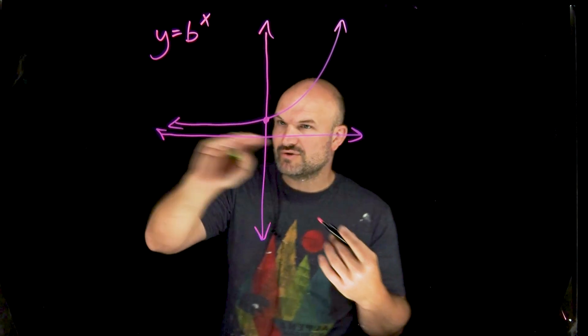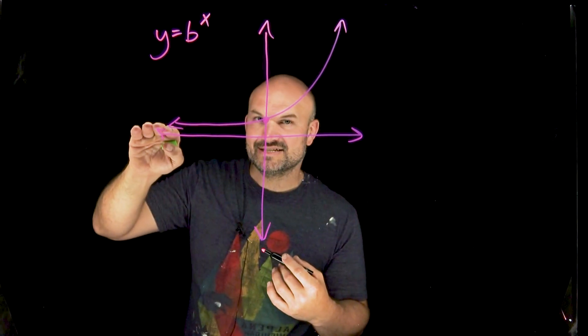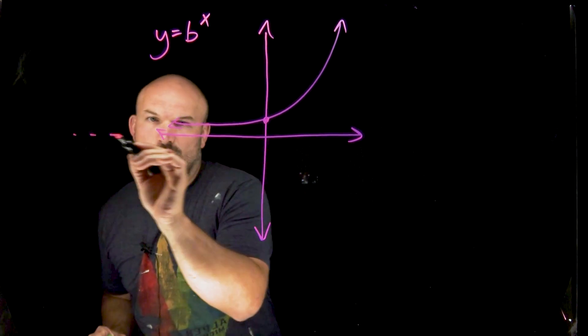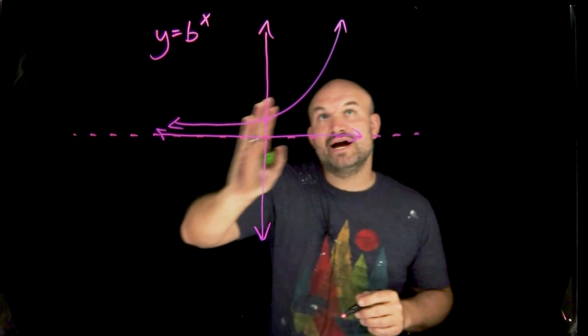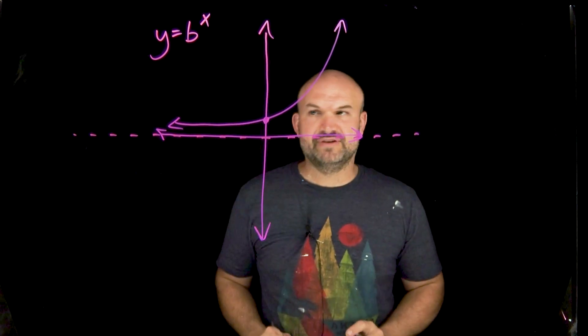As we're going to the left, it looks like this graph is getting closer and closer to the x-axis. And actually, what is approaching is a horizontal asymptote. And as we're going to the right, the graph is going all the way up to infinity.